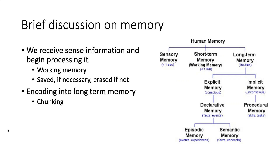Then you get into declarative memory, which focuses on the explicit memory side — specifically facts and events. That splits between episodic and semantic memory. Semantic memory is your facts — I call it jeopardy memory — things like dates, geography, Newton's second law. Episodic memory is where you'd store a real-life event that, say, taught you about Newton's second law.